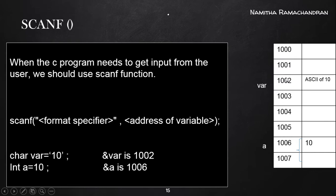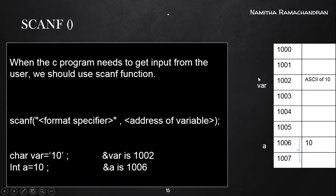We don't need to memorize all these address values. We assign a variable name to a certain memory location and use that variable name inside our program. Every byte in memory is assigned with an address value — 1000 for one byte, 1001 for another, 1002 and so on. We can assign variables to different memory bytes and use the variable name to access the value present in that memory location.